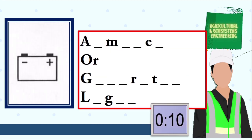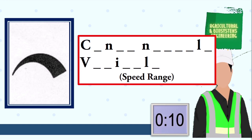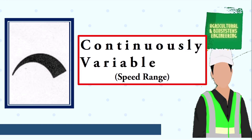Next symbol, your 10 seconds starts now. The answer is ammeter or generator light. Next symbol, your 10 seconds starts now. The answer is continuously variable. Next symbol, your 10 seconds starts now.